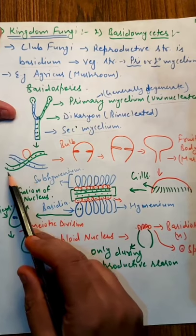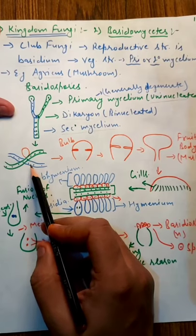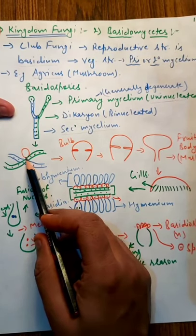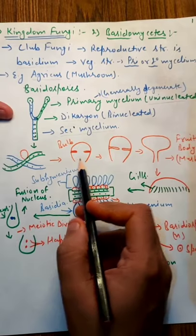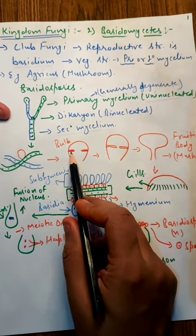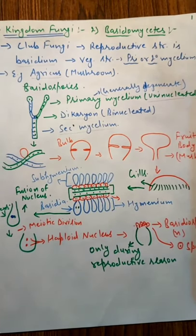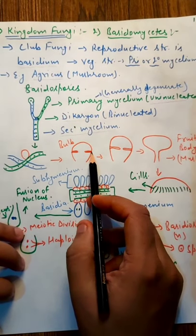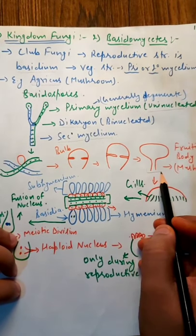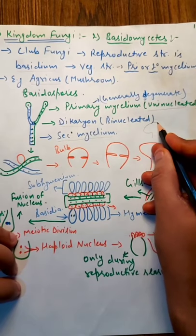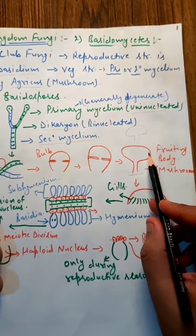Here, secondary mycelium is growing and when in favorable conditions, a bulb-like structure starts growing. This bulb-like structure we will study in detail. So I've drawn this bulb here. Now in this bulb, there is contraction from both sides. The lower portion is different and the upper portion is different. There will be growth from both sides, and lastly, it will come into this type of shape, which is exactly how mushrooms look. So it comes in mushroom shape, like this structure which is dividing.